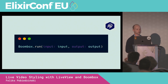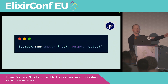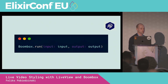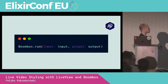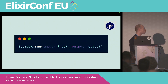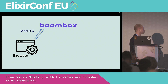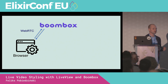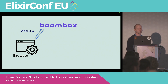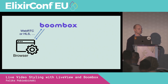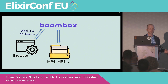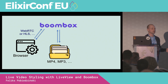Here we have a small code snippet that illustrates how you can use Boombox. To use Boombox in Elixir, we call the Boombox.run function and specify input and output. Boombox will take the media streams from the input and forward them to the specified output. Both input and output can be in various types. One supported type is WebRTC, a standard for sending and receiving live multimedia streams over the internet, implemented in browsers. Boombox also supports protocols like HLS and formats such as MP4 or MP3.